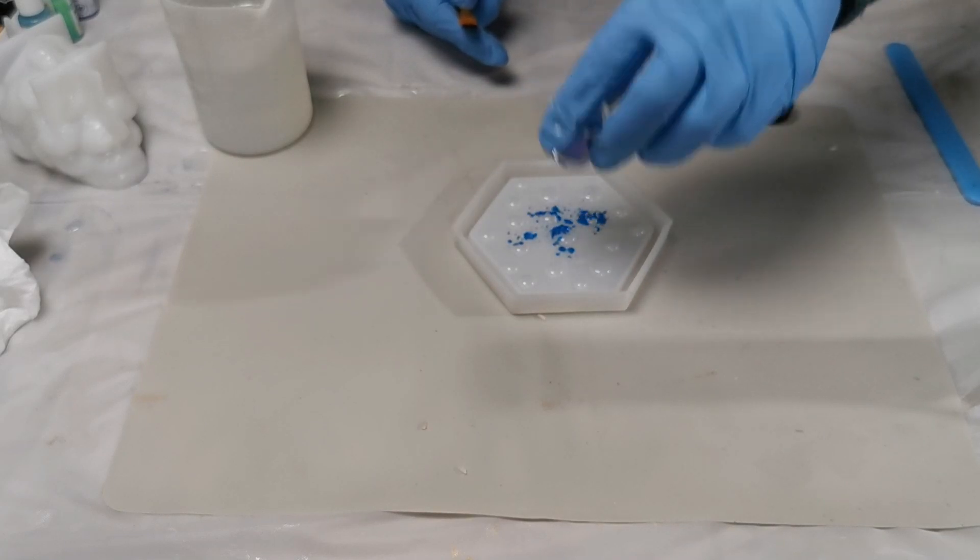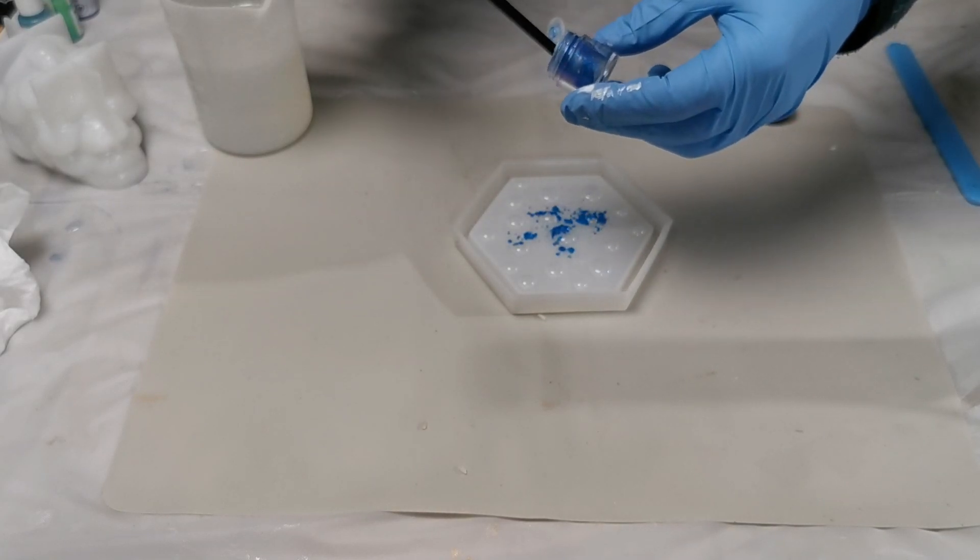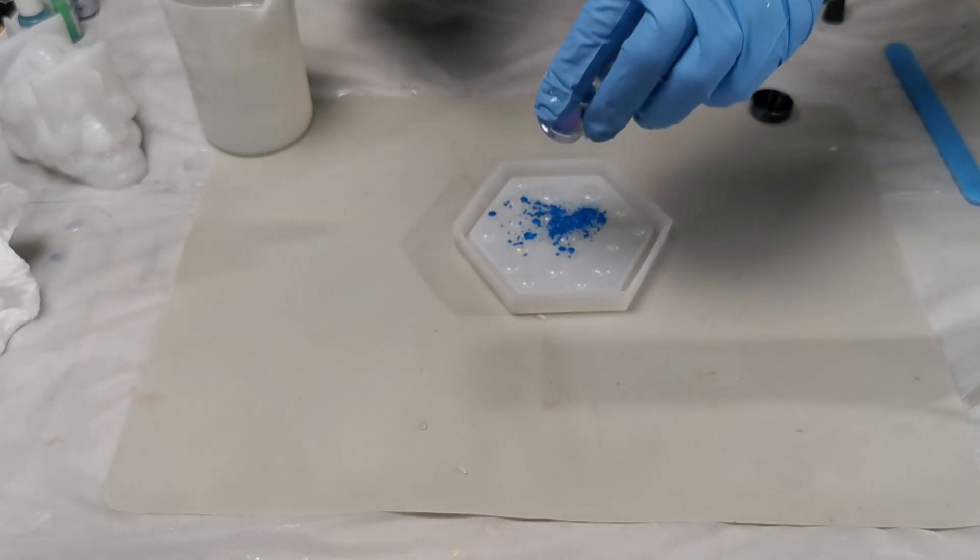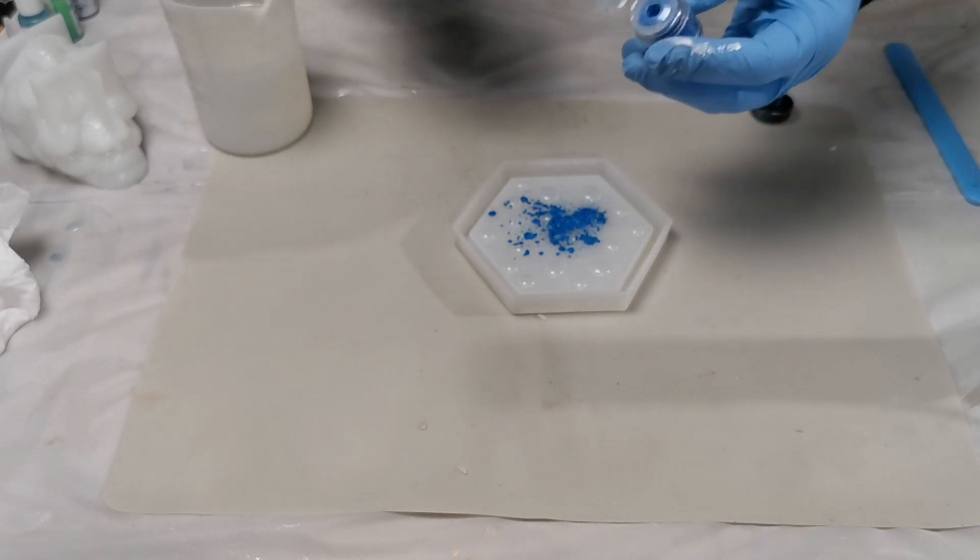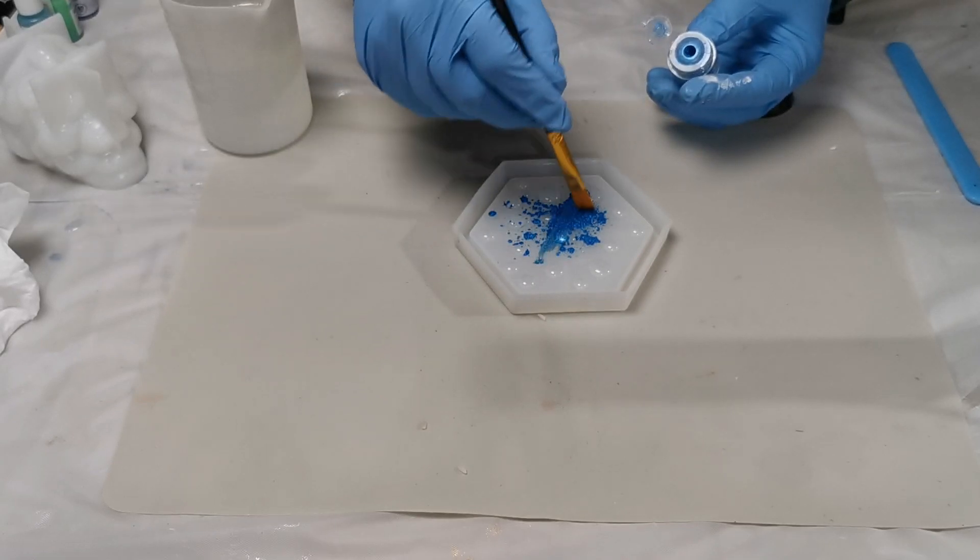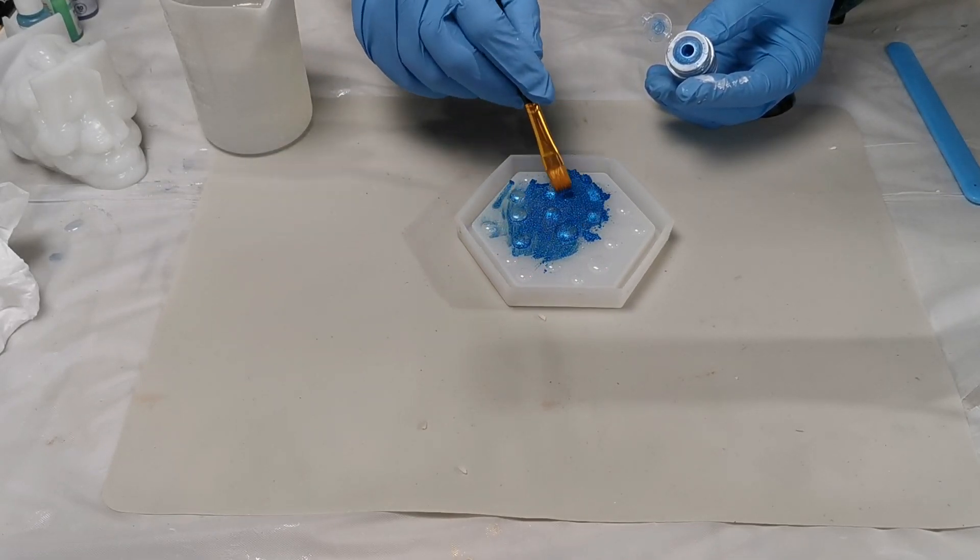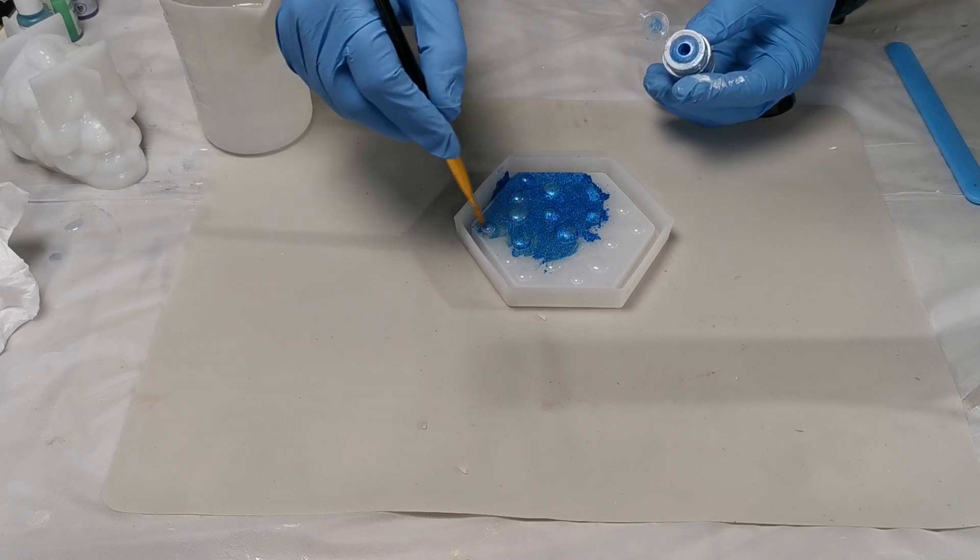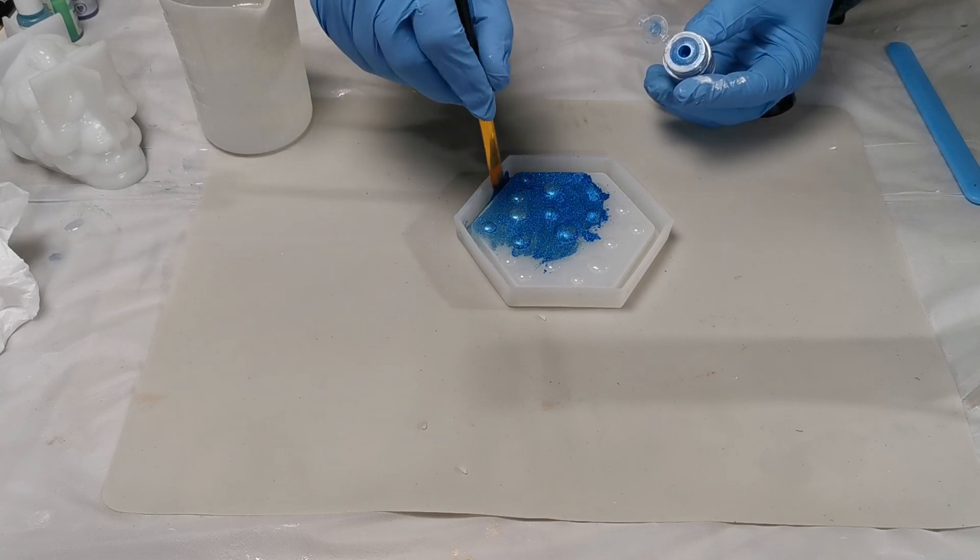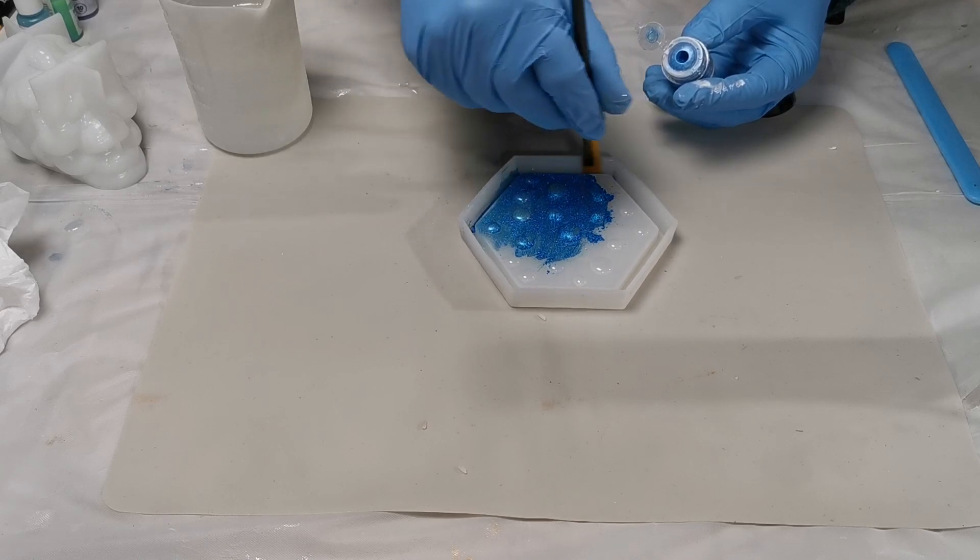The next part of making this coaster is adding the mica powder. Now there's a huge variety of mica powders out there—some are good, some are not so great. This is from Let's Resin, there's a link in the description below, and I find that their mica powders are pretty good. I just love how mica powders give that nice shimmery effect. It makes it really stand out.